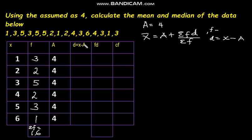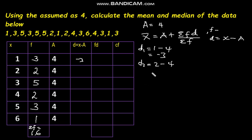Now we need to calculate the deviation. Deviation 1 will be equal to: the sample is 1 and the assumed mean is 4, so the deviation is negative 3. The second sample is 2, assumed mean is 4, so the deviation is negative 2. The sample is 3: deviation is negative 1. The sample is 4: deviation is 0. The sample is 5: it's 5 minus 4, which is 1. The sample is 6: the deviation is 6 minus 4, which is 2.